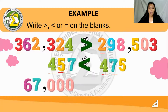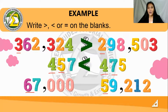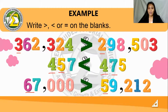Then, finally, we have this example: 67,000 and 59,212. Both are in the ten-thousands place value. Comparing six and five, we know our hungry alligator wants to eat the greatest. Our alligator will eat six over five. So 67,000 is greater than 59,212.